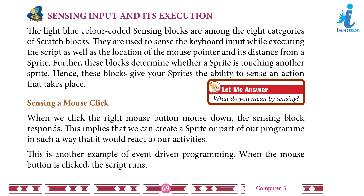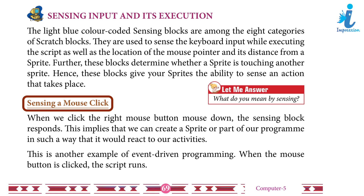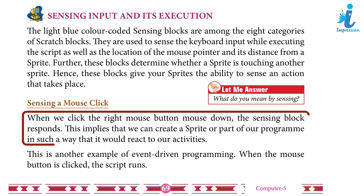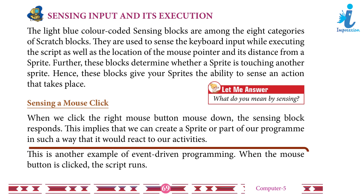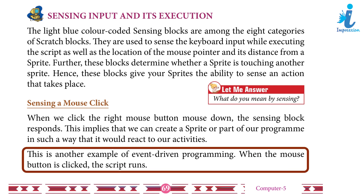Sensing a mouse click: When we click the right mouse button — mouse down — the sensing block responds. This implies that we can create a sprite or part of a program in such a way that it would react to our activities. This is another example of event-driven programming — when the mouse button is clicked, the script runs.